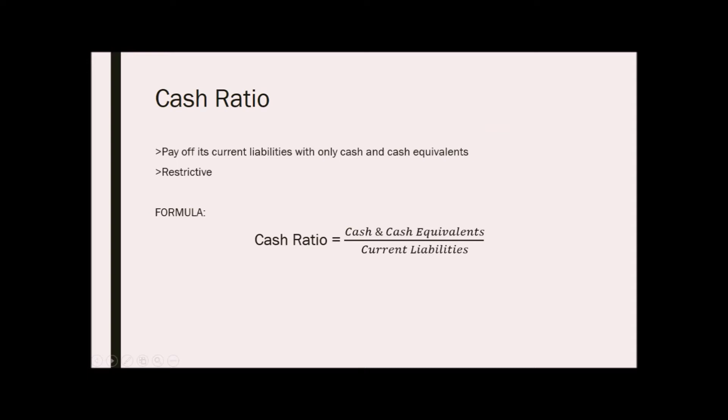Lastly, cash ratio measures the firm's ability to pay off its current liabilities with only cash and cash equivalents. The cash ratio is much more restrictive than the current ratio or quick ratio because no other current assets can be used to pay off the current debt and only cash can do it. Creditors are particularly interested in this ratio because they want to make sure that their loans will be repaid in cash.